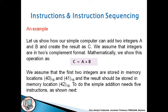Then we can take a simple example of it. Let us show how our simple computer can add two integers A and B and create a result as C. We assume that integers are in the two's complement format. Mathematically we show this operation as C equals A plus B. We assume that the first two integers are stored in memory location 40 and 41, and the result should be stored in memory location 42.